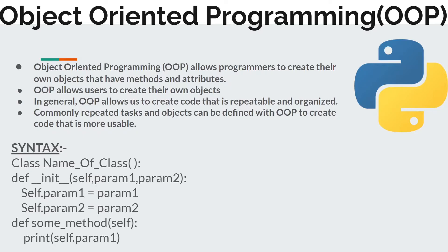First we have self. Self is also known as the instance of the object itself, along with parameters such as param1 and param2. It is not mandatory to use exactly two parameters — you can use more, but one parameter is sufficient. Then you have self.param1 — when you pass a parameter you assign it to the attribute of the object: self.param1 equal to param1, and self.param2 equal to param2.